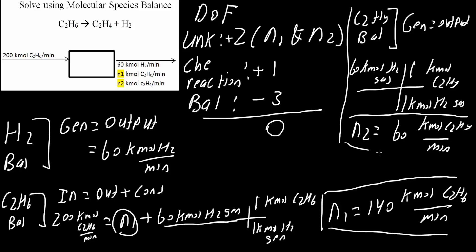Now we can do a quick check. In the product stream, we have N1 is 140, N2 is 60, and H2 is 60, which would produce 260 kilomoles. You would say that it's not balanced—this is 200, and here you have 260. But that's not the case,